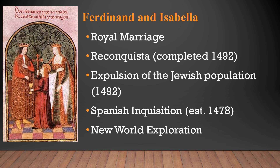Finally, one other way Ferdinand and Isabella strengthened the Spanish state was through New World exploration. Columbus sailed to the New World in 1492, and by the 1500s Spain claimed and set up colonies in most of South America, Central America, and parts of North America. These would bring great riches in gold and silver to Spain, and the empire further developed after the death of Ferdinand and Isabella under their grandson, Charles V.